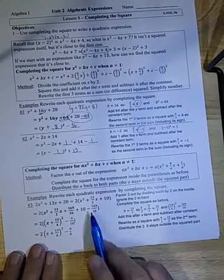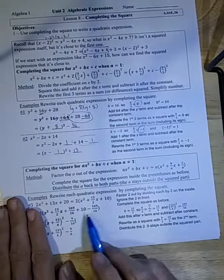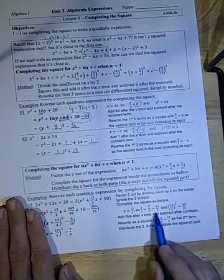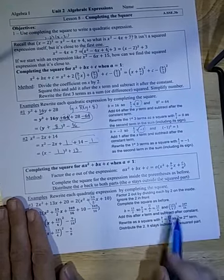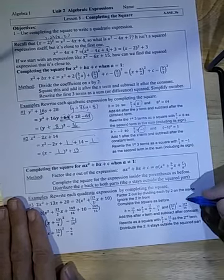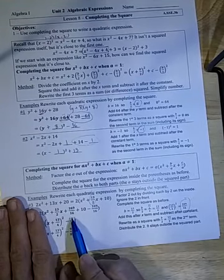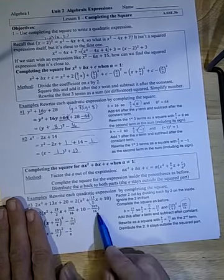Now you're going to ignore that 2 out on the front. You're going to take this term, the 13 over 2, divide that by 2 to get 13 over 4. Square that gives you 169 over 16. So 169 over 16 is the number you're going to add and subtract.